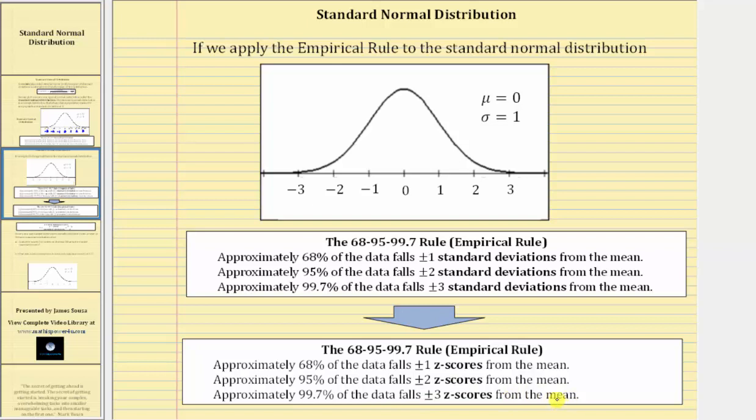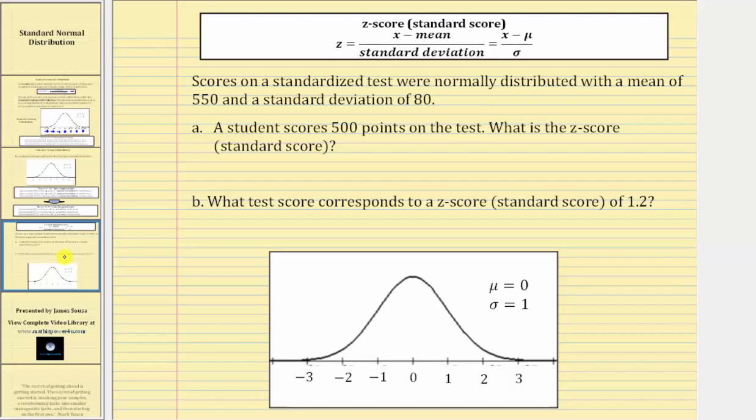Let's look at an example. Scores on a standardized test were normally distributed with a mean of 550 and a standard deviation of 80. So we know μ, or the mean, is equal to 550 and the population standard deviation, or σ, is equal to 80.